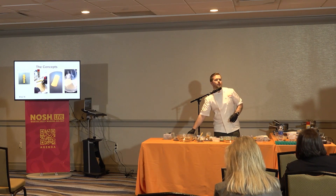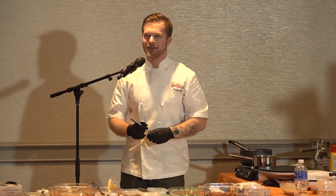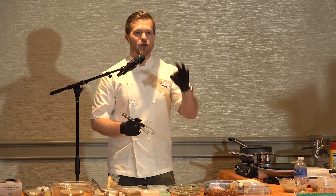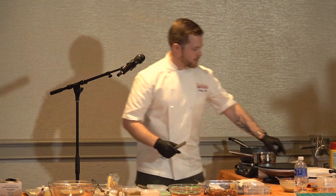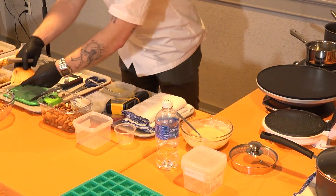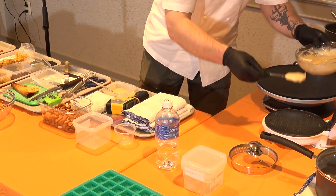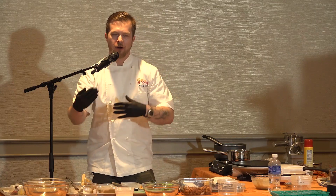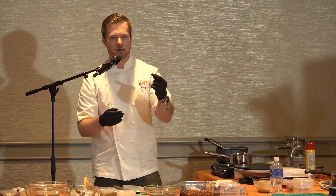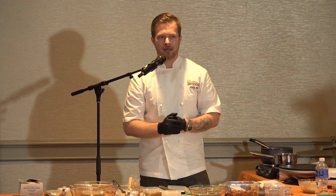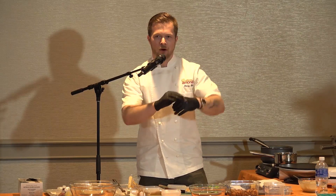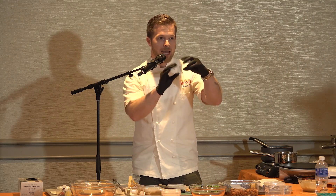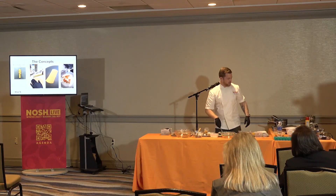A big part of the challenge is also getting everything to be shelf stable. In the chamoy almond butter stick, there are three different elements to keep in mind: the filling, the wafer, and the outer coating. You want to make sure the water activity matches throughout the entire product. For the wafer to stay crispy, it needs to be under a water activity of 0.6. If you have something on the inside with a higher moisture content, it will permeate through the outer parts and you'll get something that's quite soft.